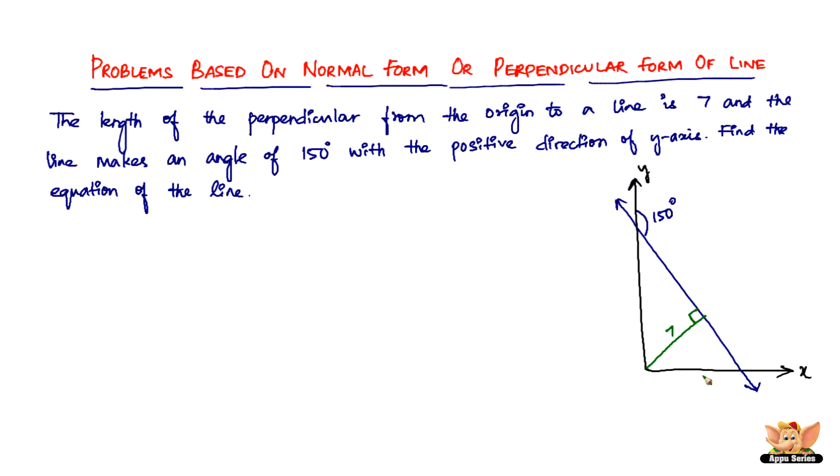We need this angle, which is alpha. So how do we find that? It's not very difficult. Now let's find this green part of the angle. If this is 150 degrees, this entire thing is 180, so this should be 30 degrees.